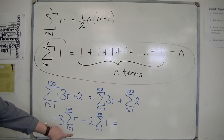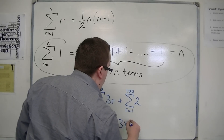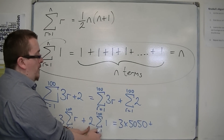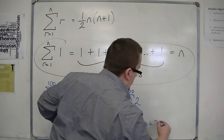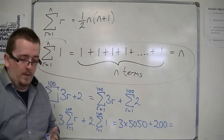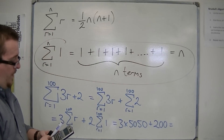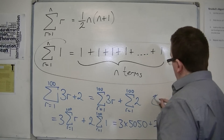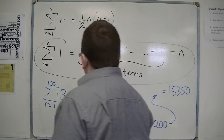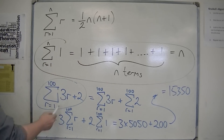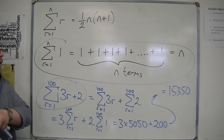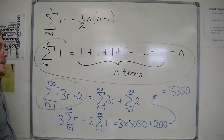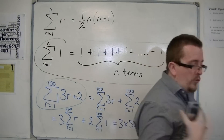We can see that gives us 3 times 5,050 plus 2 lots of 100, which is 200. So 3 times 5050 plus 200 equals 15,350. We use these two facts to figure out that answer. The sum of n natural numbers is given in the formula booklet; the sum of 1 equals n we need to remember. In the next video we'll see how to find the sum of squares and cubes.